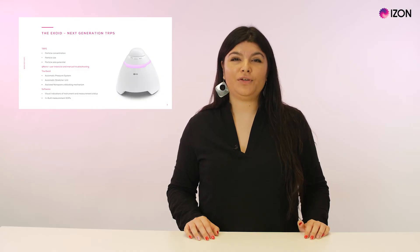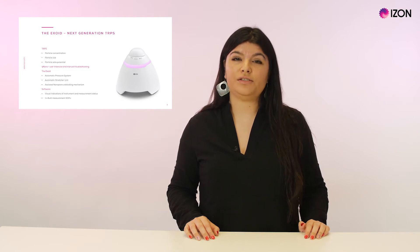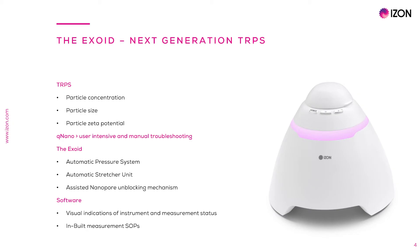Qnano, the original TRPS instrument, could be complex to use for some researchers. Nevertheless, to respond to the researchers' need, the EXOID was developed and launched to significantly improve user usability and advance efficiency in terms of time and effort to take measurements.